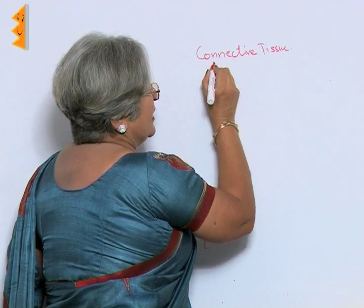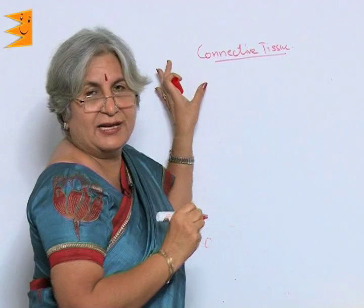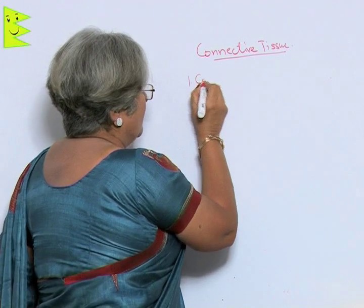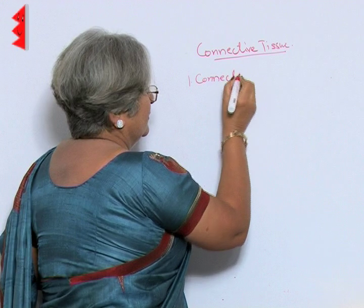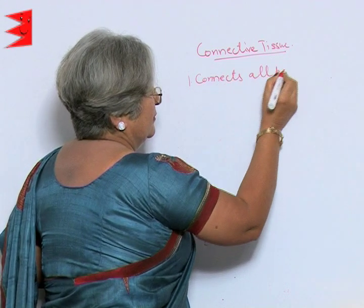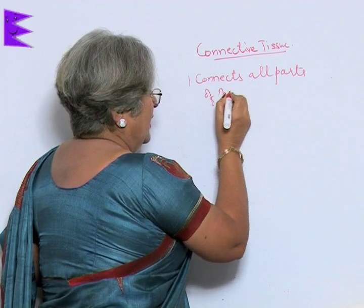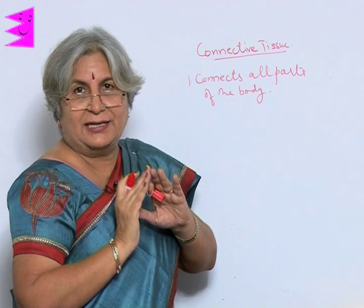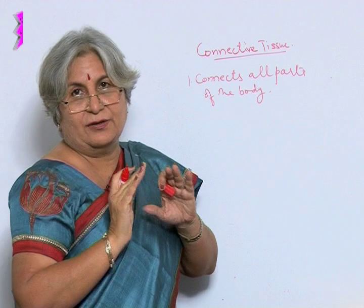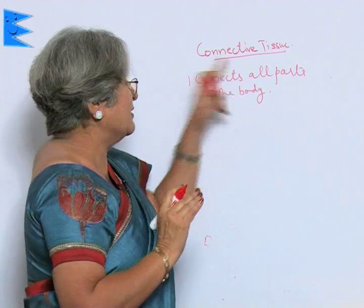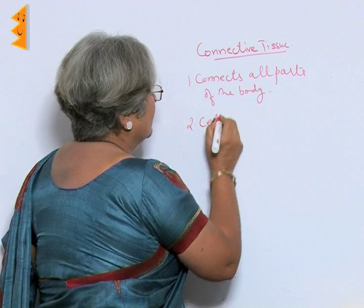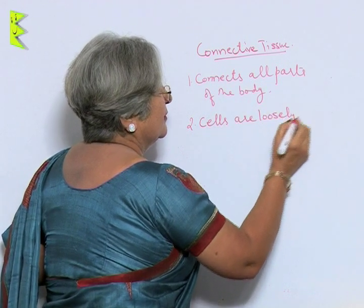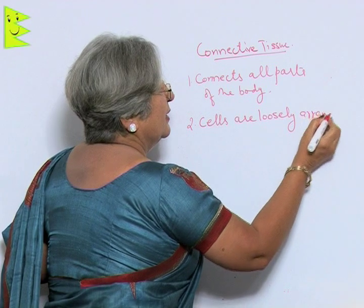The main characteristics of connective tissue is, as the very name suggests, it connects all parts of the body. In the case of epithelial tissue, the cells were tightly packed with no intercellular space. But in the case of connective tissue, cells are loosely arranged in a matrix.